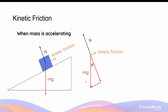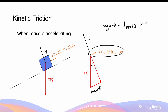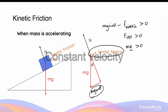Sometimes when the mass is moving, the component of weight force acting down the slope, Mg sin theta, can be greater than the kinetic friction provided by the surface. When this occurs, the net force acting down the slope is no longer zero — that is, Mg sin theta minus kinetic friction gives a net force greater than zero. When the net force is greater than zero, the mass experiences acceleration and is no longer in dynamic equilibrium. When Mg sin theta equals kinetic friction, the mass travels at constant velocity; when it is greater, the mass accelerates down the slope, gaining velocity over time.